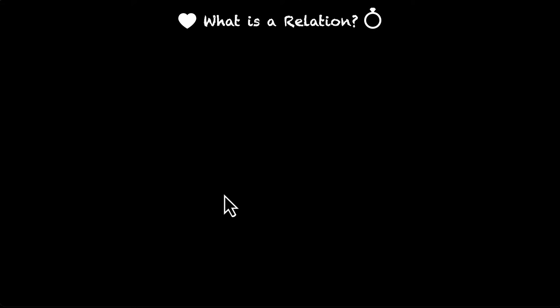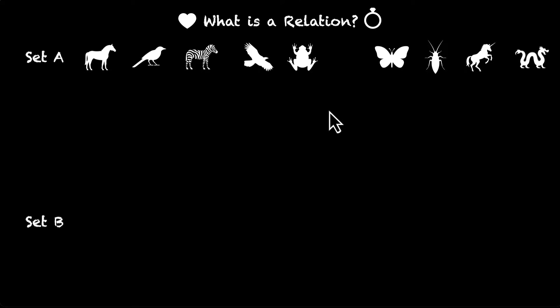Let me present you some sets. Here's set A and here's set B. Now I'm going to write down the elements of these two sets. Set A has a horse, a cockroach, a unicorn, an eagle, a frog, a zebra, a dragon, a butterfly, a bird, and a fish. Okay.